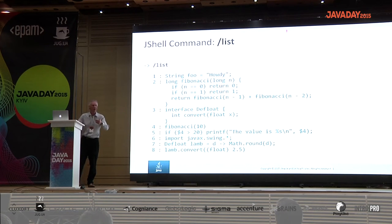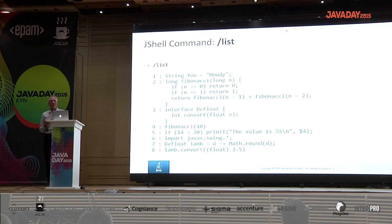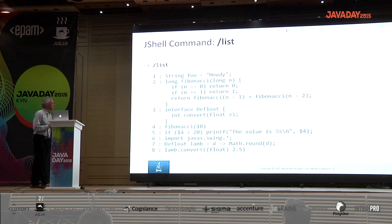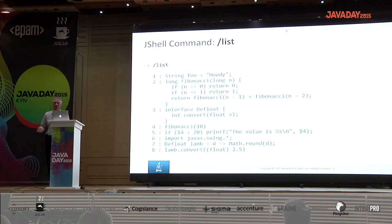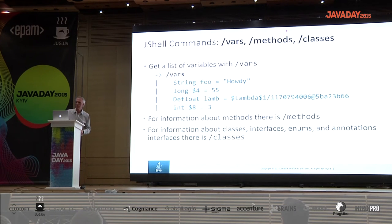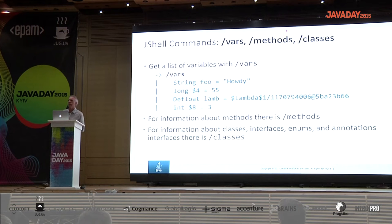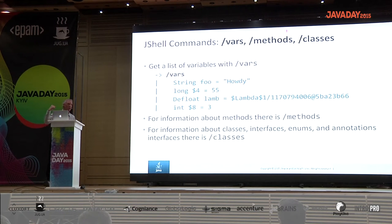The /list command shows all the active valid snippets by default. You also see identifiers which you can refer to in order to edit them with /edit or get rid of them with /drop. You can query what variables you've defined — including explicitly created ones as well as the automatically created temporary variables. Similarly, there are queries for methods and classes, which includes classes, interfaces, and so forth.